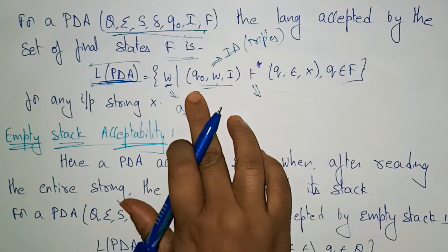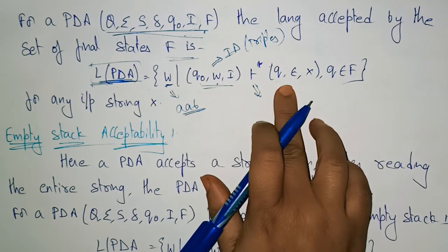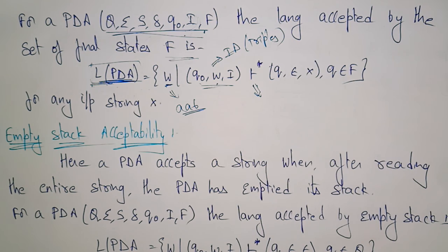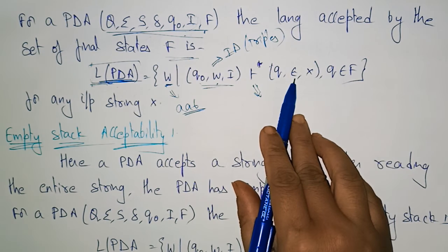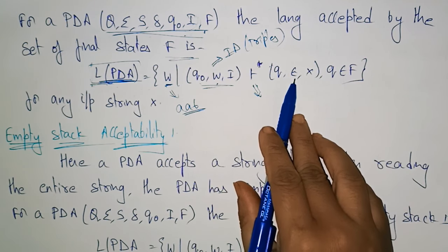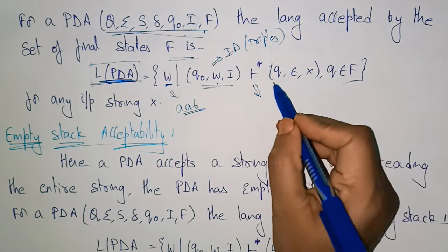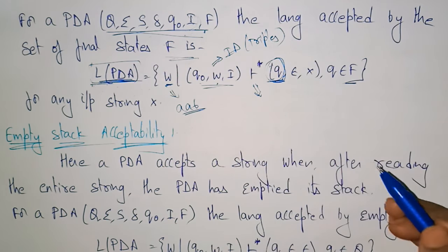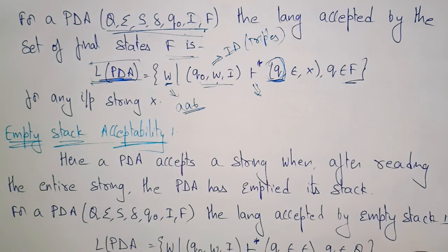Q-naught changing its state to Q means one turnstile move has been made. If a star is used, the moves may be more than one. W changes to the empty string, reaching the final state. Whenever the stack is empty (epsilon) and X reaches the final state, Q belongs to the final state F — then we say the string is accepted by final state acceptability.